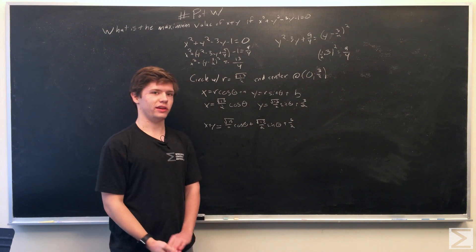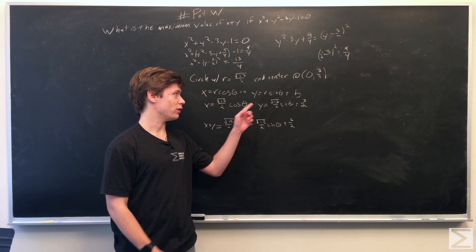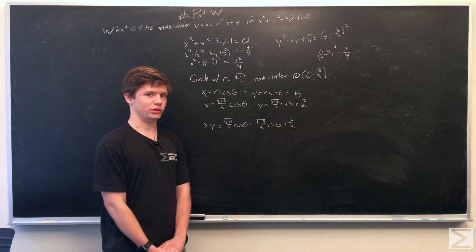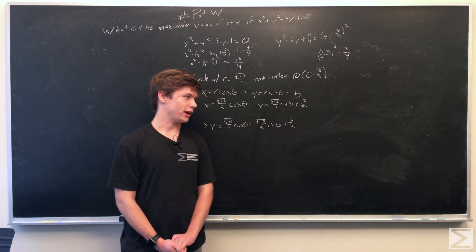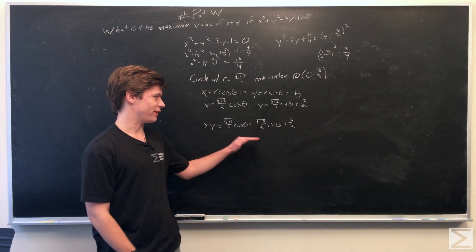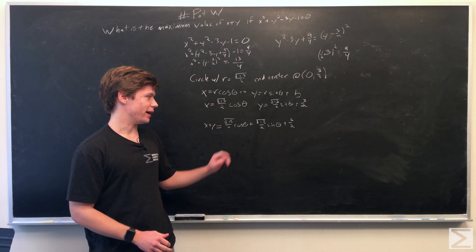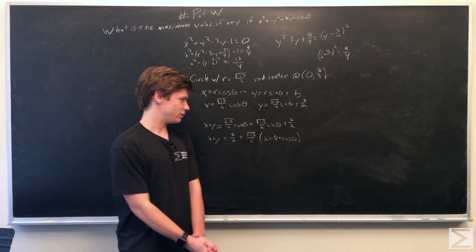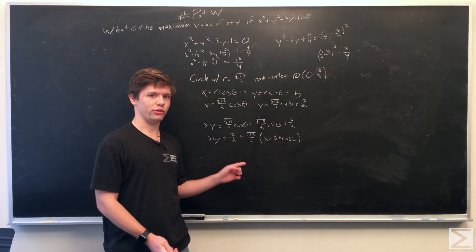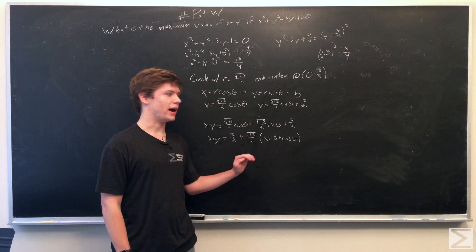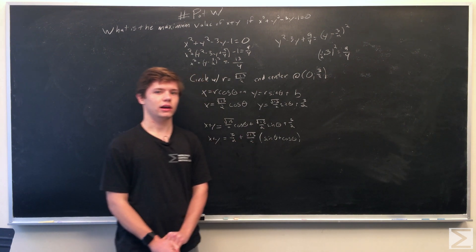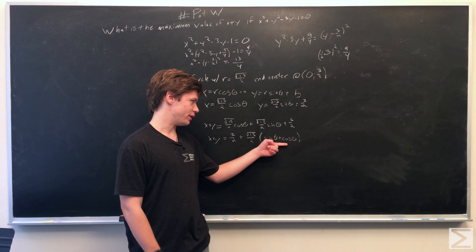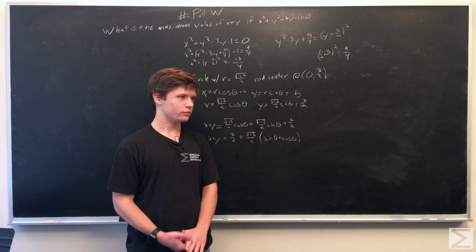We've taken x equal to r cosine theta and y equal to r sine theta, plugged in the value of r, and summed them together. So x plus y equals radical 13 over 2 times cosine theta plus radical 13 over 2 times sine theta plus 3 over 2. Simplifying, x plus y equals 3 over 2 plus radical 13 over 2 times (sine theta plus cosine theta). To maximize this, we take the first derivative of sine theta plus cosine theta and set it equal to 0.